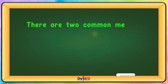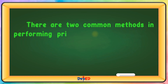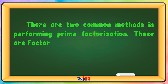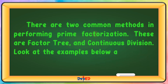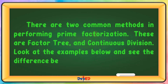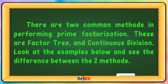There are two common methods in performing prime factorization. These are the factor tree and continuous division. Look at the examples below and see the difference between the two methods.